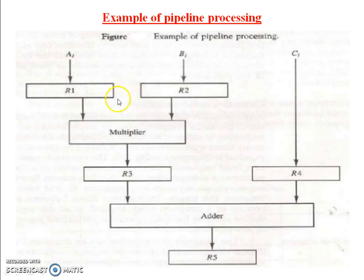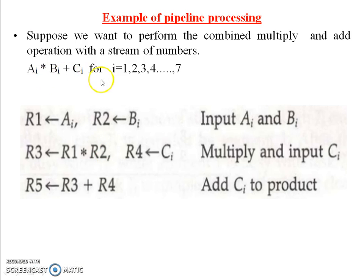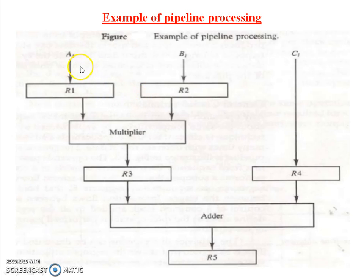This is the hardware design of the equation Ai * Bi + Ci. Ai is the input of R1, Bi is the input of R2. First, use a multiplier circuit: R1 * R2 stored in R3. Ci is the input of R4, directly stored in register 4. Now an adder circuit is used: R3 + R4. So R1 * R2 + R4, and the result is stored in R5.